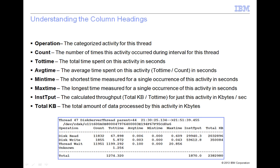Operation: This is the sub-activity or category. The values in each row are subtotals for this thread. Count: This is the number of times the actions in this category were performed during the measurement interval. Divide this number into total KB to calculate the data block size per category.